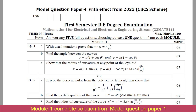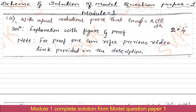Hello everyone. In this video I am going to discuss the scheme and solution for model question paper 1 for first semester BE degree examination, Mathematics 1 for Electrical and Electronics Engineering stream, with subject code 22MATE11, revised as DMATE101. I am going to discuss module-wise — I have chosen Module 1, which is common for all streams. All stream students can refer this video for the complete solution of Module 1.